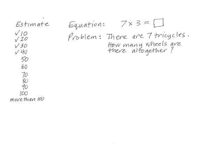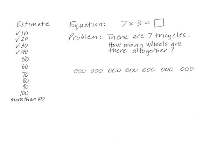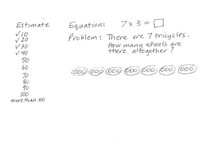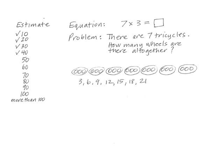I then used think-pair-share and had the students talk with a partner to come up with ways to solve the problem. When I asked them to share their ideas, Amelia reported first. She suggested that I draw circles for the wheels and to do it seven times. I drew them and asked her, 'Did I do what you were thinking?' She said yes, but to put a circle around each of the threes to show it better. I did this and Amelia nodded. Several students said to count them, so first we counted the circles by ones, then by threes, and I recorded the multiples of three.